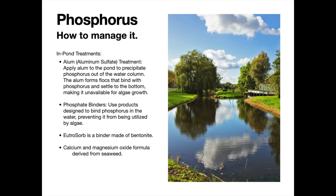For in-pond treatments, once phosphorus is in the pond and readings are high, we would typically use binders or flocculants. These don't remove the element from the pond — they sequester it — but they can make its bioavailability more limited to algae, which is helpful. A commonly used binder in the industry is alum — aluminum sulfate. Like all binders, it binds to the phosphorus, creates clumpy masses, makes them heavy, and they sink to the bottom and stay down there.